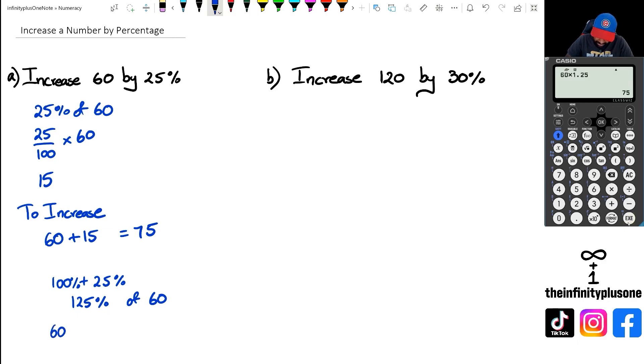So if we have a look at question B, we've got increase 120 by 30%. What I could do in the calculator is simply 120 multiplied by 1.30, because remember the 1 stands for 100% and the 0.3 is 30% of 120. So it's doing all those steps in one equation, and we get 156.